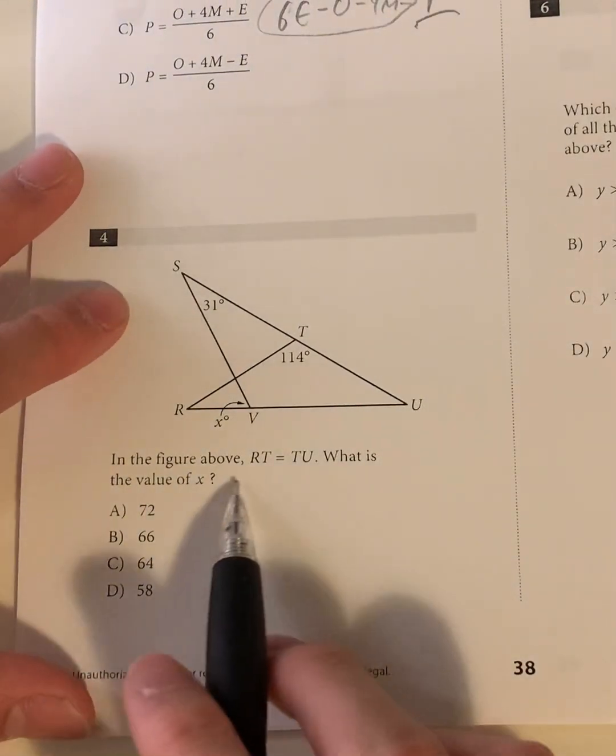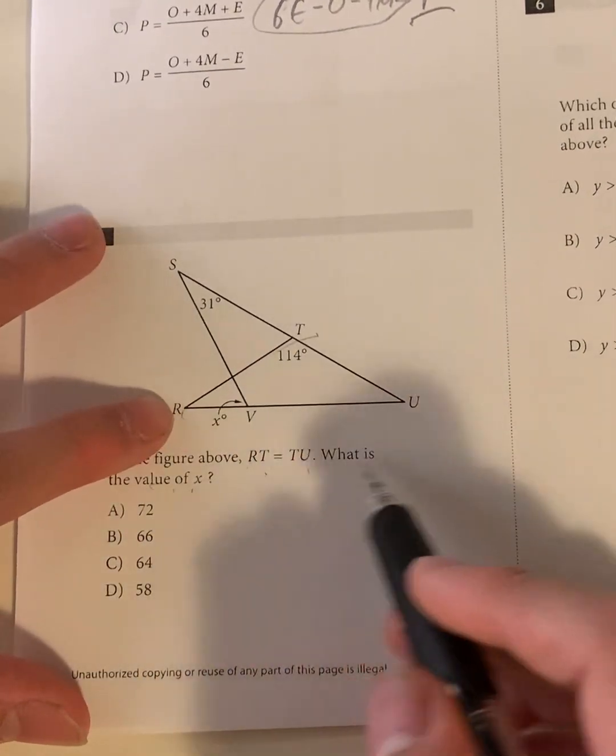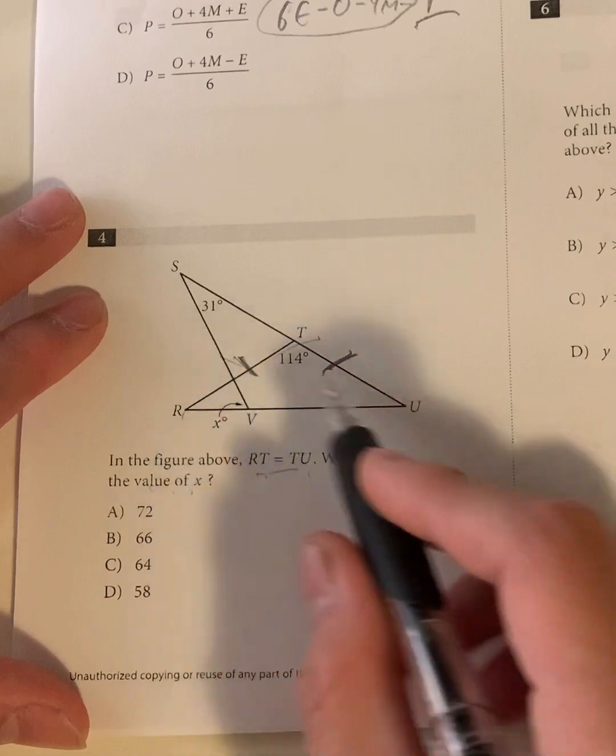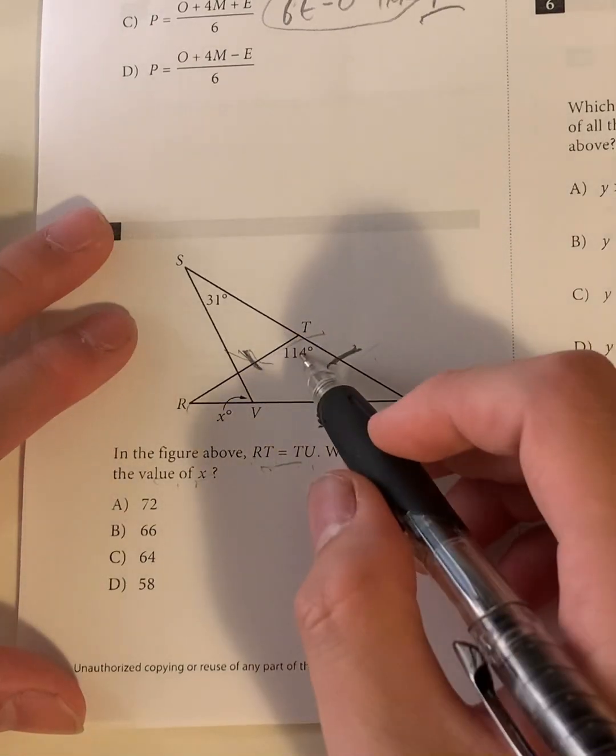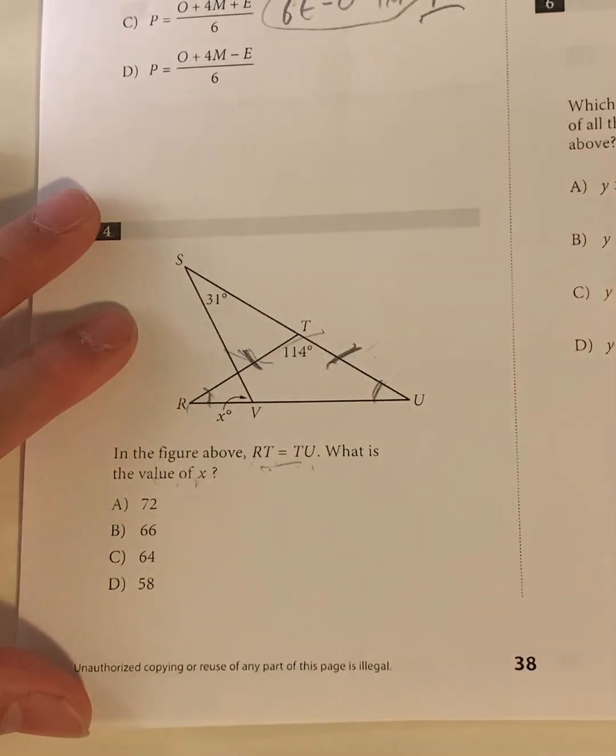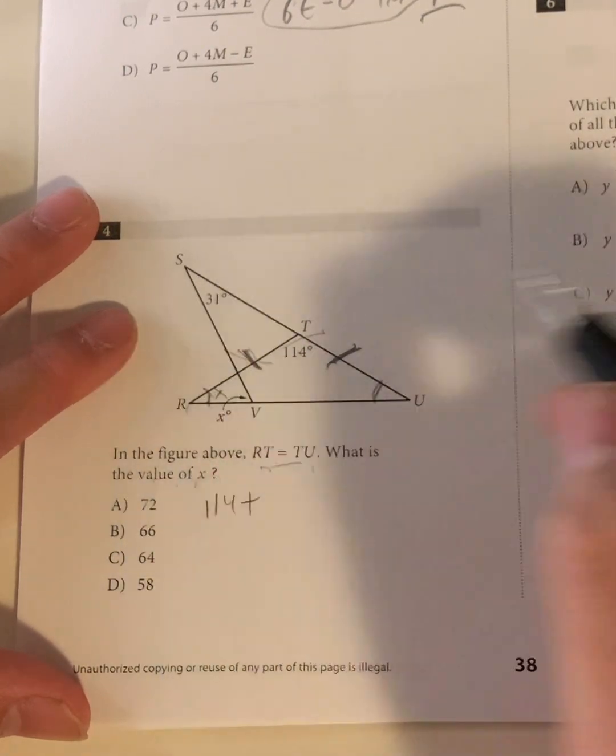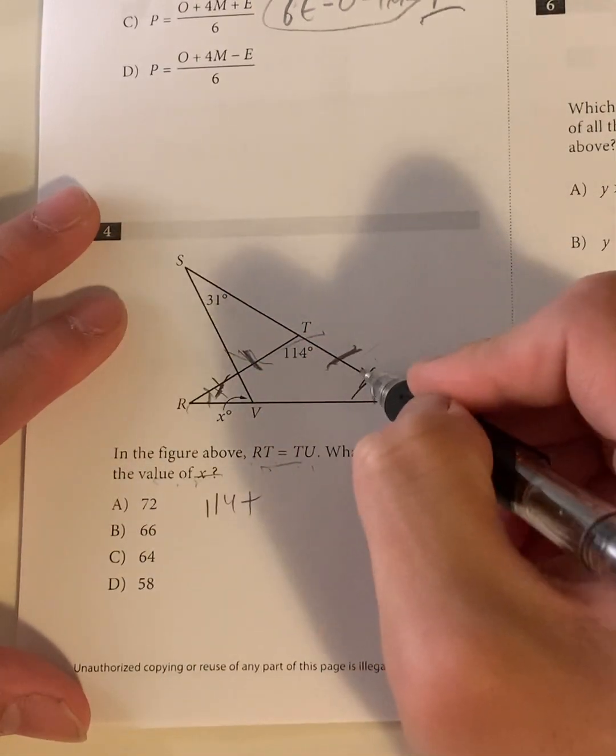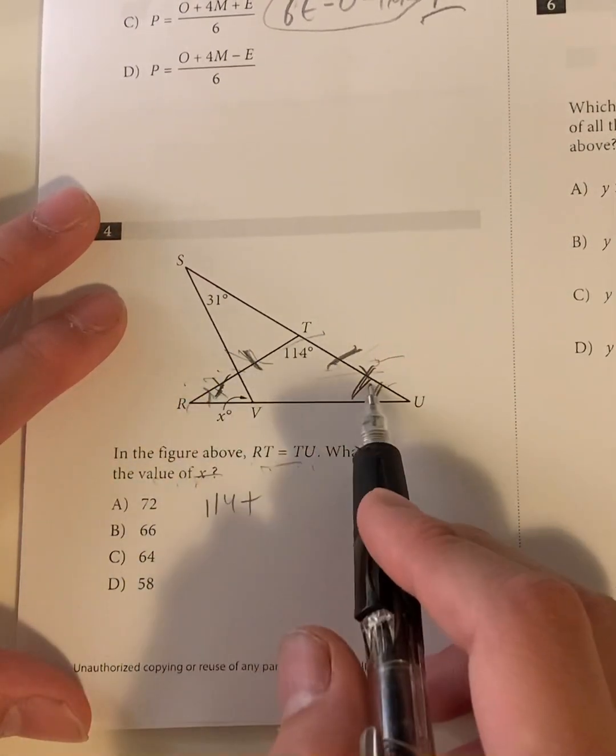Question 4. In the figure above, RT is equal to TU. What is the value of x? So RT, where's RT? RT is right here, and that's equal to TU. So let's mark that down. We mark down a congruency by writing two of these to show that two sides are equal. And what's the value of x? So solving this, well, we know that this is 114, right? That also means what? That means that these two angles are equal. Well, if these two angles are equal, what does that tell us? Well, that tells us that 114 plus this angle, which we'll call Y. Actually, no, we'll not call it X. There's X there. Let's not confuse ourselves. We'll call it Y.